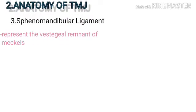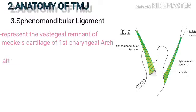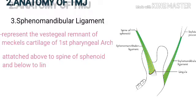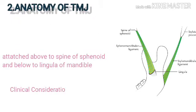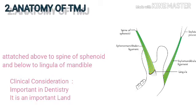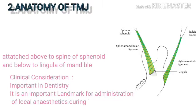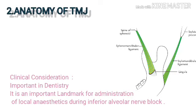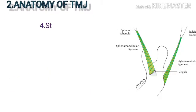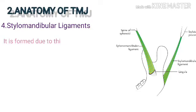The sphenomandibular ligament represents the vestigial remnant of Meckel's cartilage of the first pharyngeal arch. It is attached above to the spine of the sphenoid and below to the lingula of the mandible. Clinical consideration: it is an important landmark in dentistry for administration of local anesthetic during the inferior alveolar nerve block.